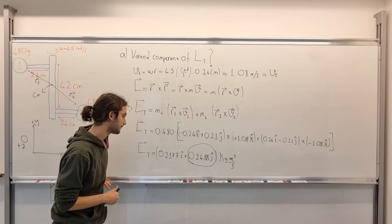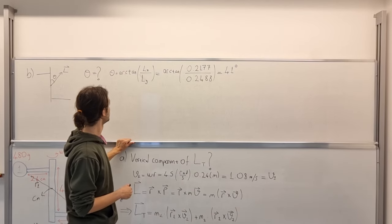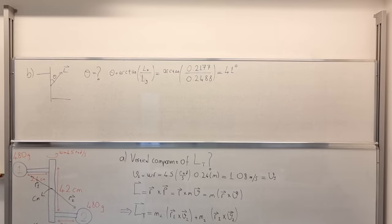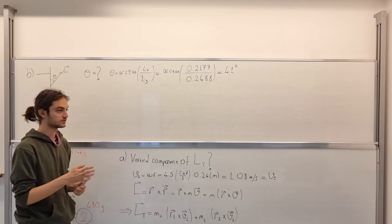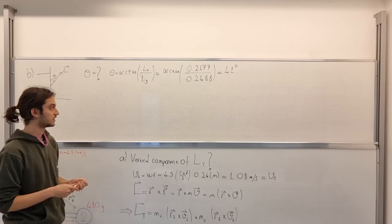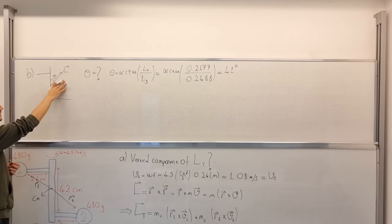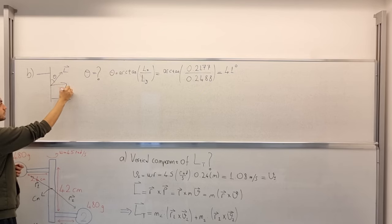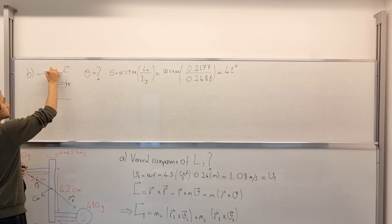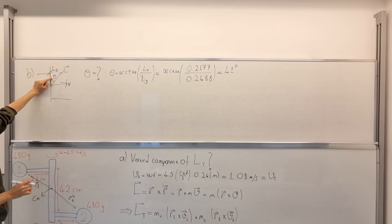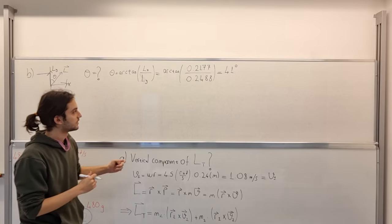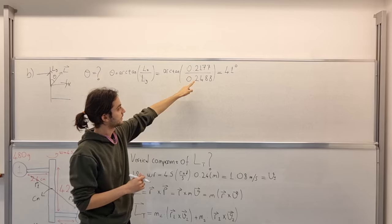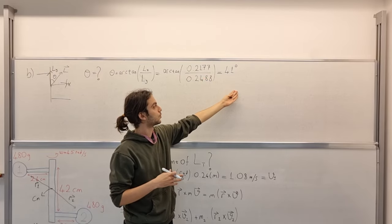So, in option B, you can see that since both of the components of L, the total angular momentum, are positive, we can write or draw something like this. So, it has a positive component. Let's just say Lx and this Ly. So, we need to find this angle, which is simply arctangent of Lx over Ly. That means this expression, and then we acquire 45 degrees.